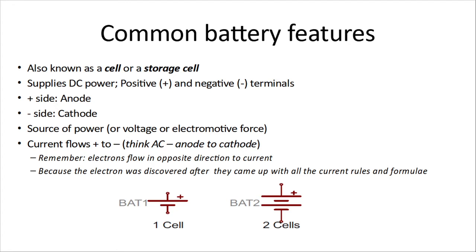Common battery features. Batteries are known as cells or storage cells, and they supply DC power with a positive and a negative terminal. The plus side is the anode, the negative side is the cathode, and they're a source of voltage or electromotive force. Remember from our basic formulas, V is equivalent to E — voltage or electromotive force. The current flows from plus to minus.